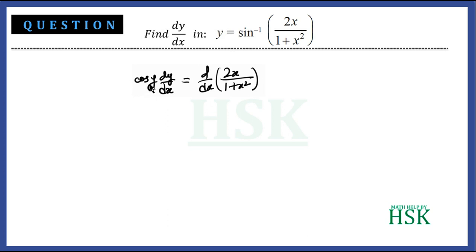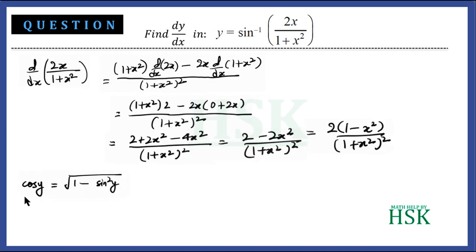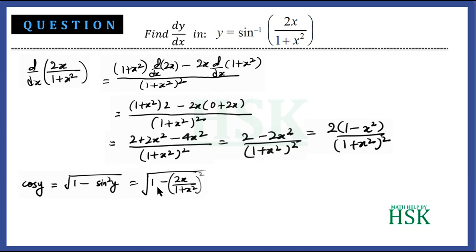Since y was given as a function of x, we must convert cos y into terms of x. Using the identity cos²x = 1 − sin²x and taking the square root, cos y = √(1 − sin²y). Since sin y = 2x/(1+x²), we substitute to get cos y = √(1 − (2x/(1+x²))²) = √(1 − 4x²/(1+x²)²).